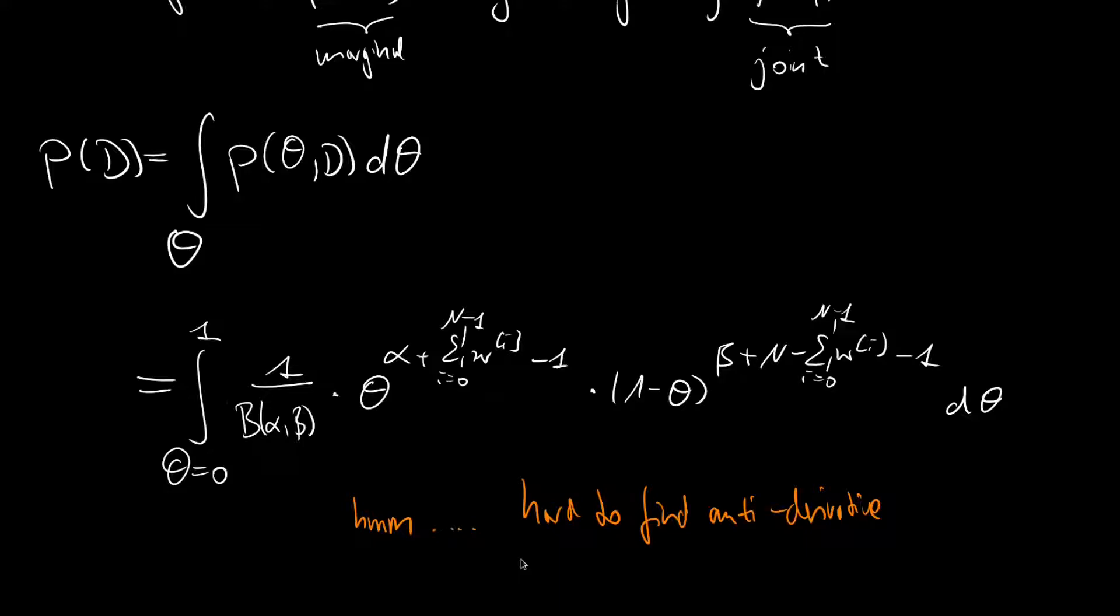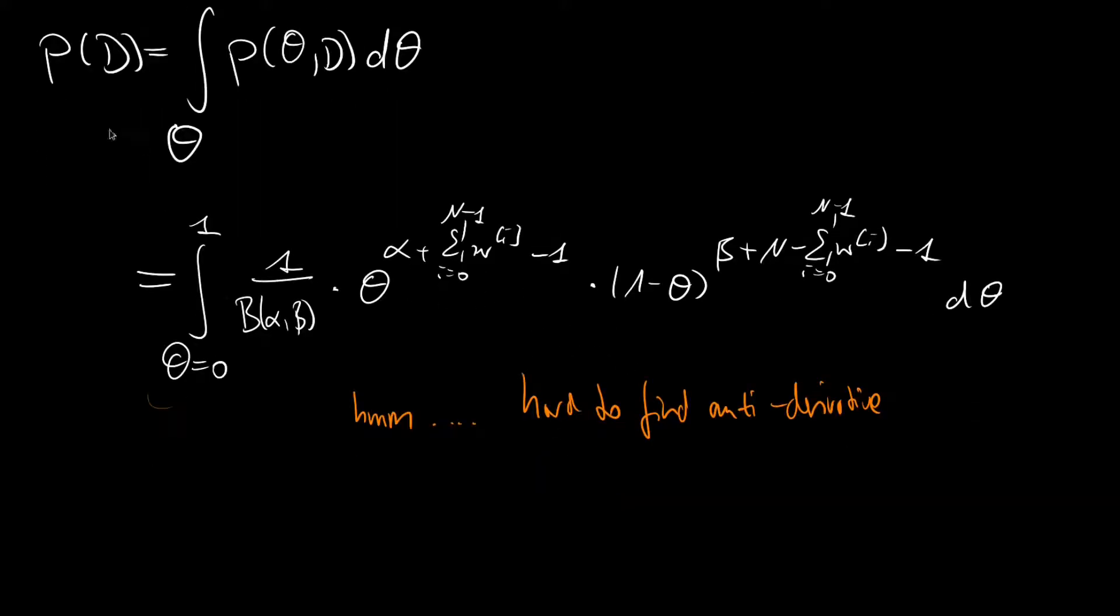This difficulty here is already eminent in the case where we just look at the beta-Bernoulli model. And this beta-Bernoulli model is, compared to other what you probably could observe in probabilistic machine learning, something fairly simple. Now imagine you would have more than just one latent variable, or multidimensional latent variables, and you would have to integrate over all of them. All of them would create this kind of complicated integral.